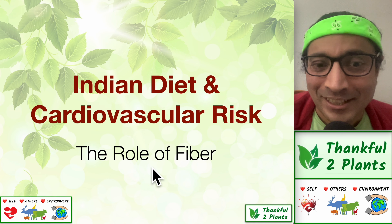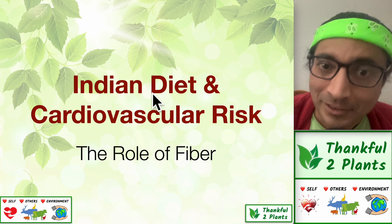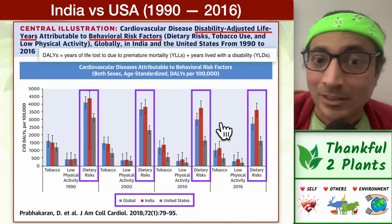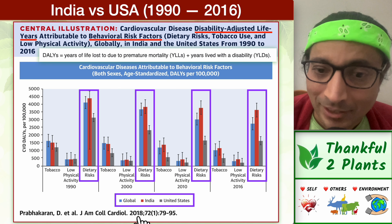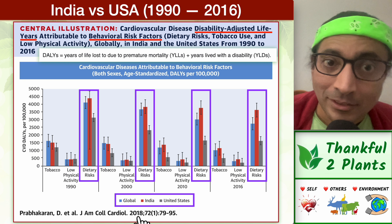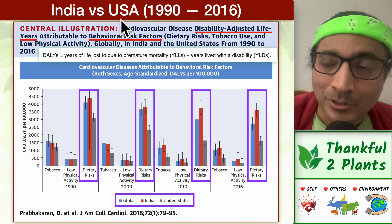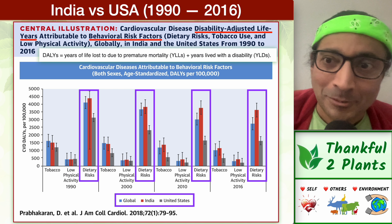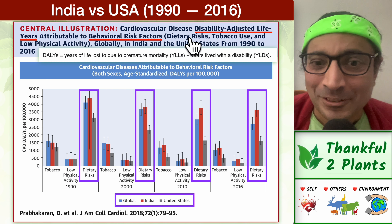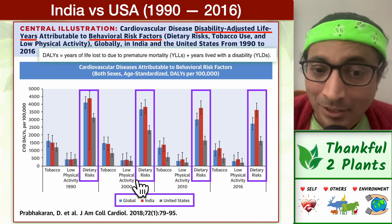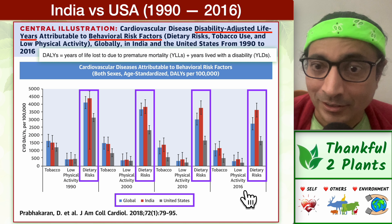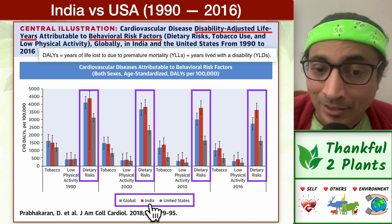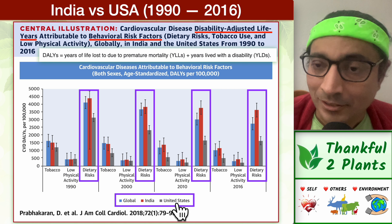Let's look at the role of fiber in the Indian diet with respect to cardiovascular risk. Here is a fascinating study published in 2018 that compared India and US food plates across years 1990, 2000, 2010, and 2016, examining dietary risks with respect to cardiovascular disease. The red bars are India and the gray ones are the United States.